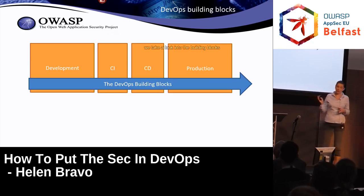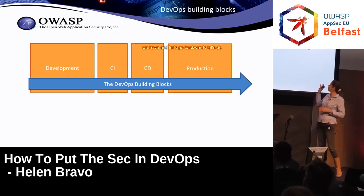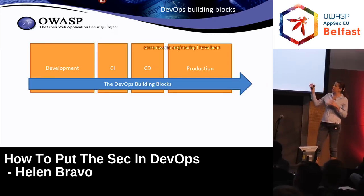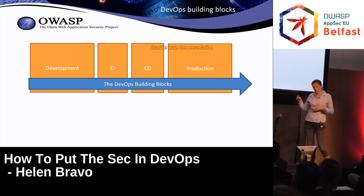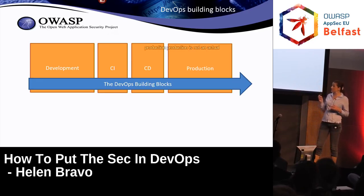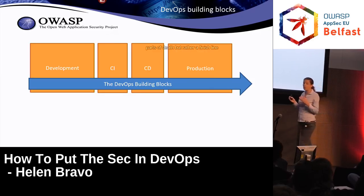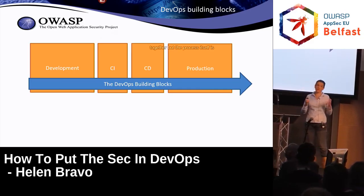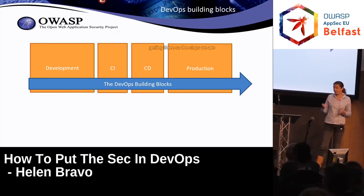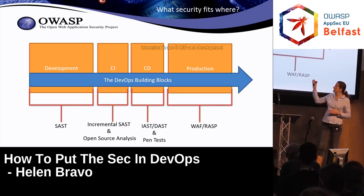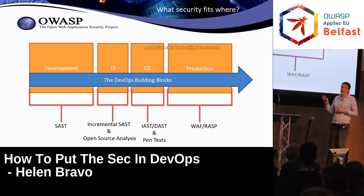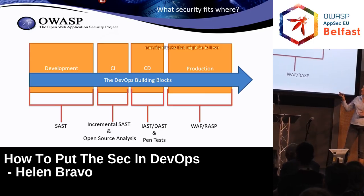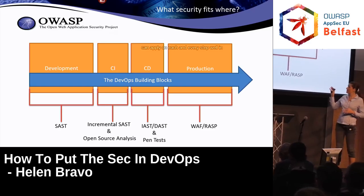Taking a look at the building blocks, let's do some reverse engineering going backwards. Production is not an actual part of DevOps, but rather a finish line — we are striving to get there, but the process itself is getting there. So the steps we are interested in are CI, CD, and development. Those are the building blocks where the processes actually happen on the way to production, and there might be several security checks we can apply at each and every step.